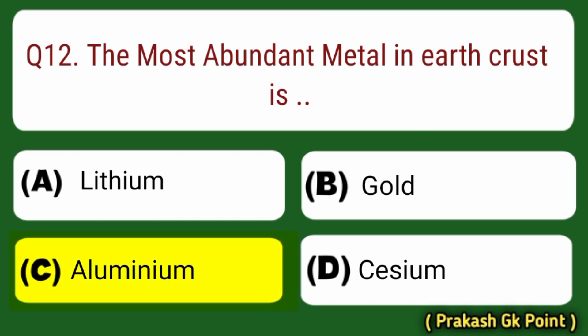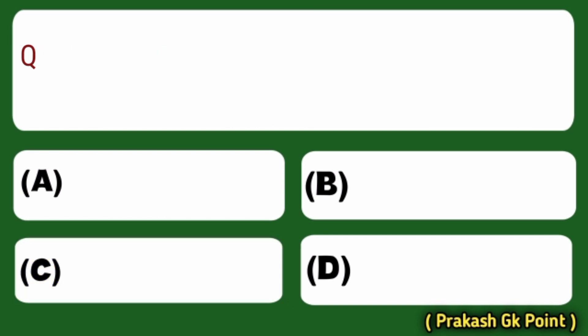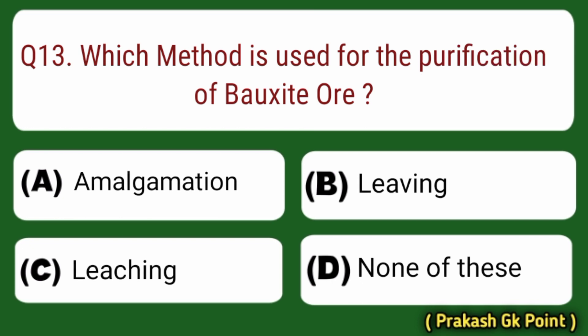The most evident metal in earth's crust is? Answer: Option C — Aluminium.